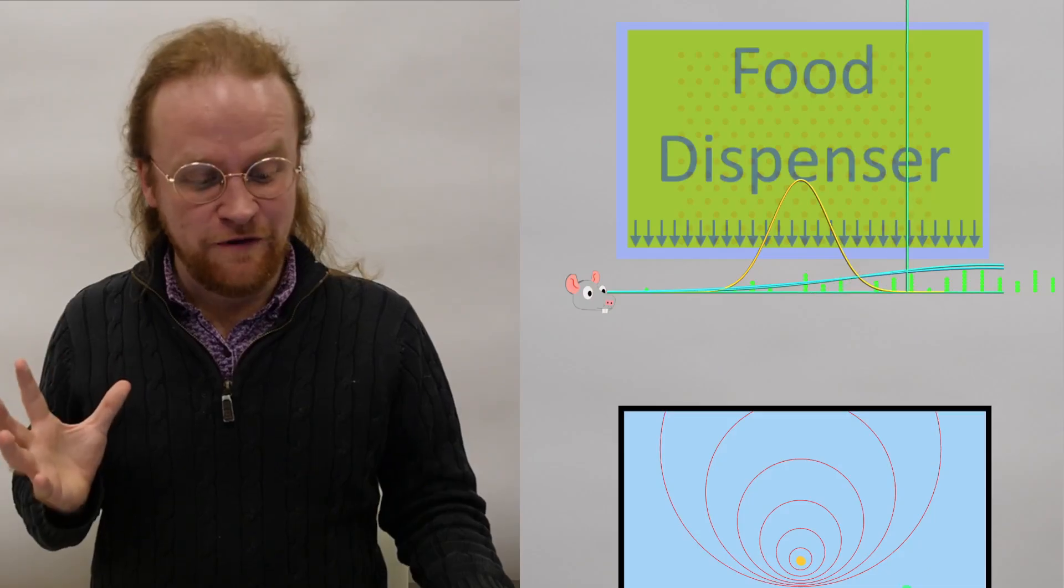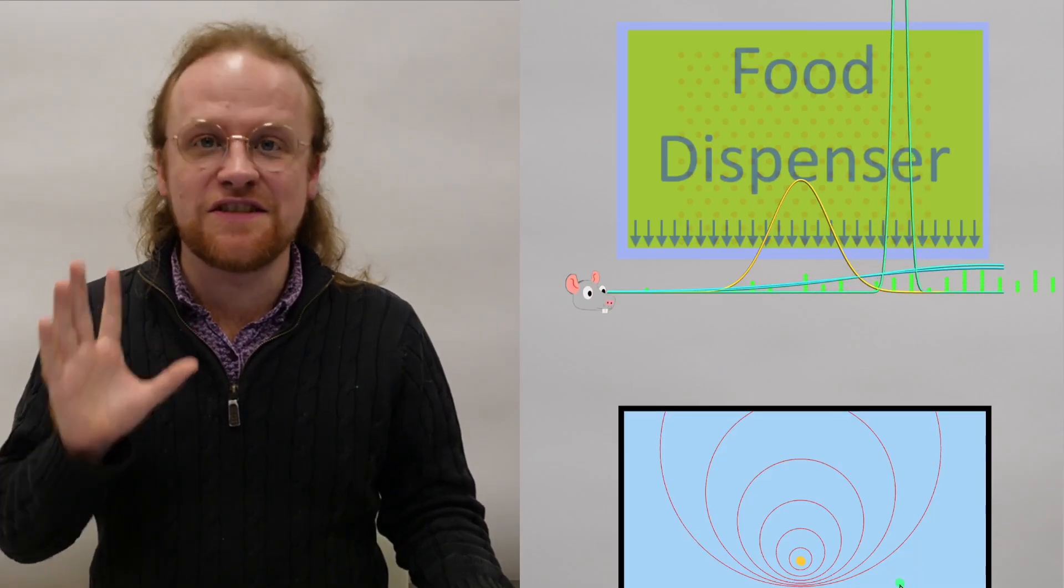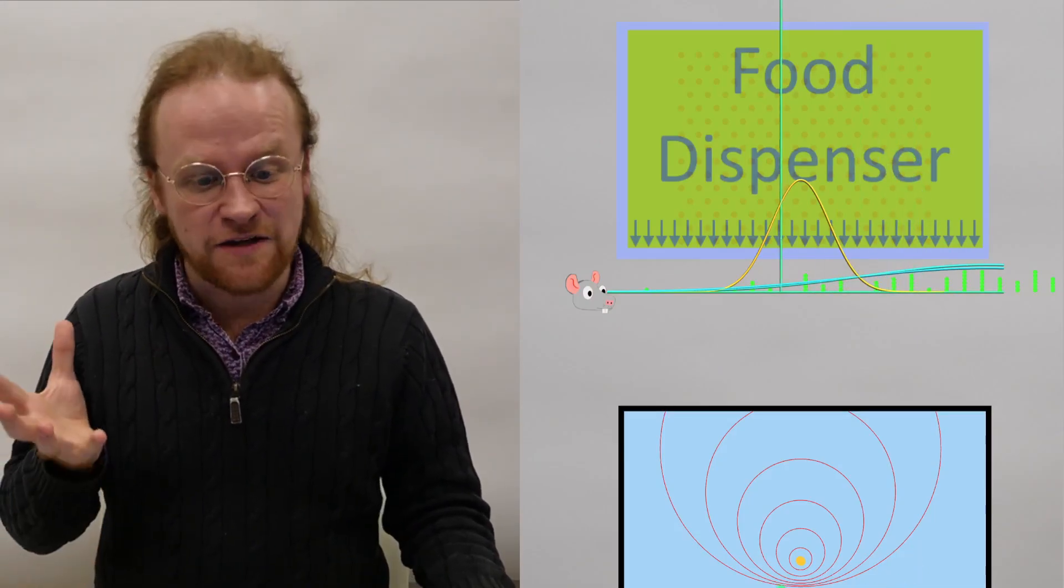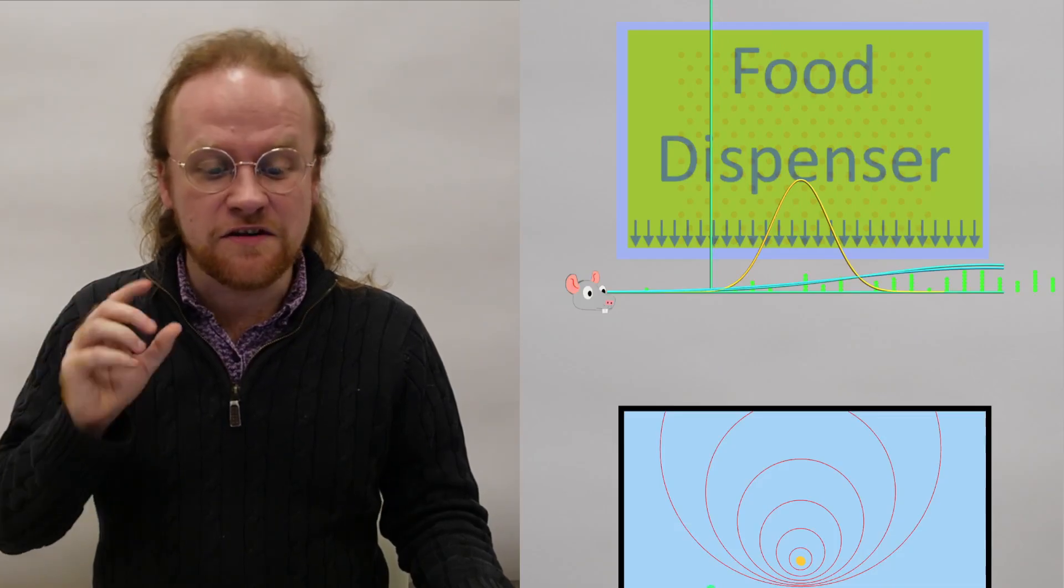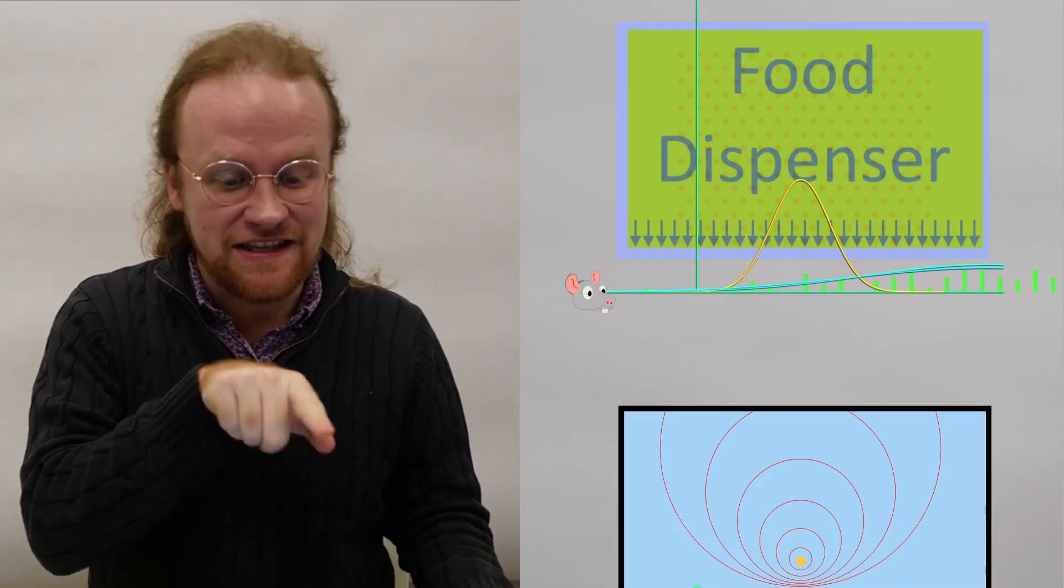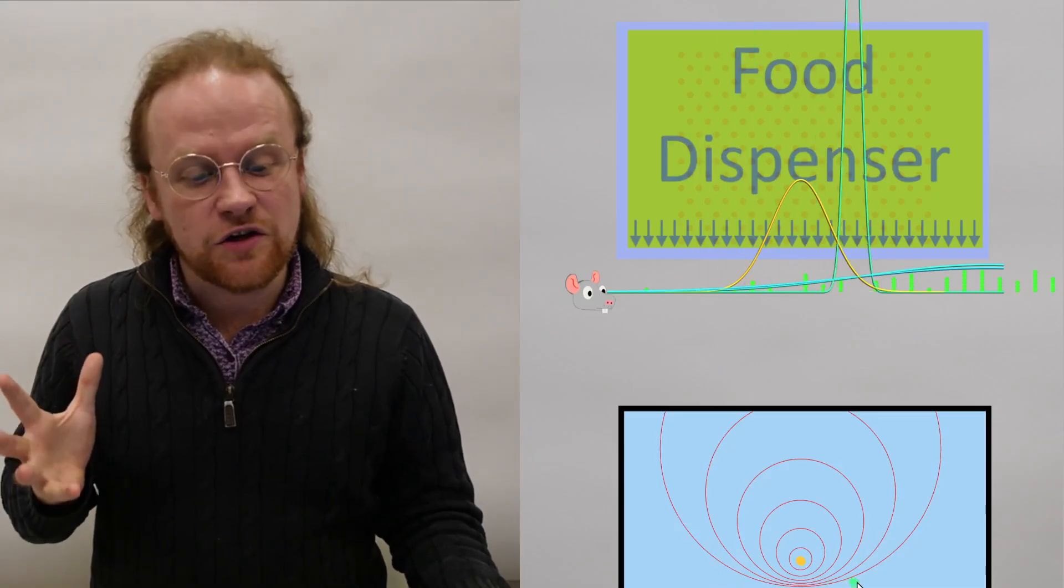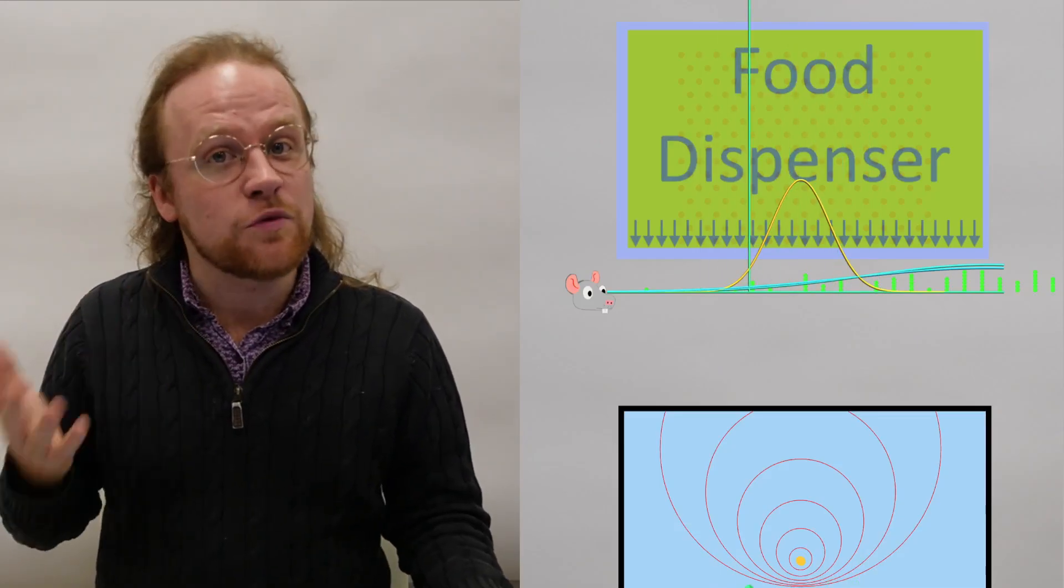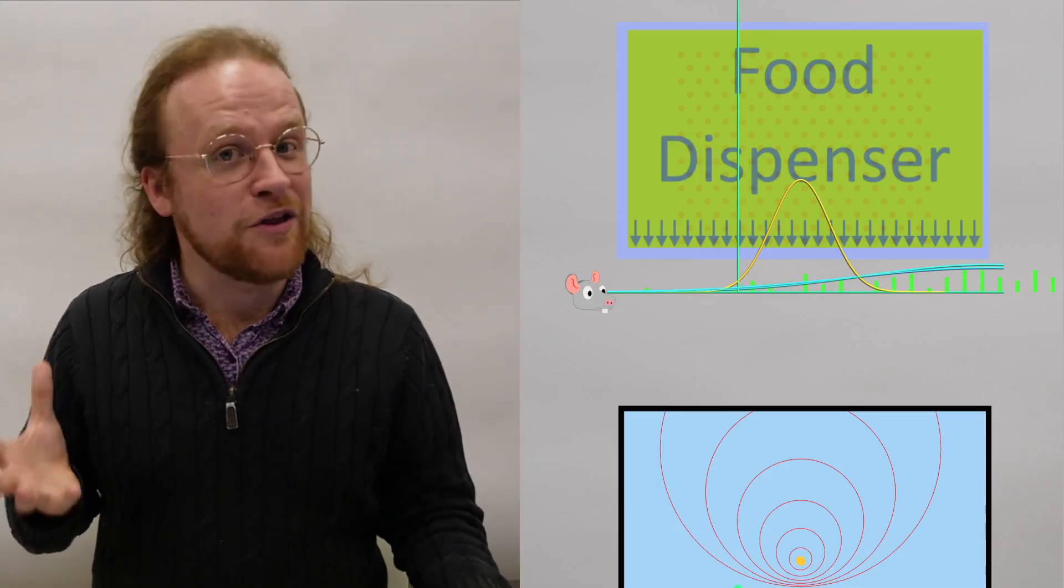Points at the bottom of this space represent complete certainties. That is, the rat believes with certainty that food is going to drop out at this exact point here. These things are called Dirac deltas and they're used quite a bit in quantum physics. And by the way, the distance between any non-certain distribution and a certainty is infinite.